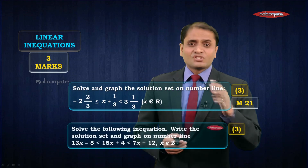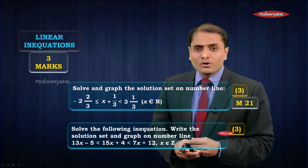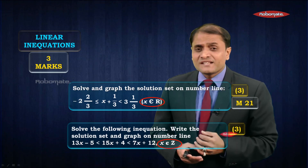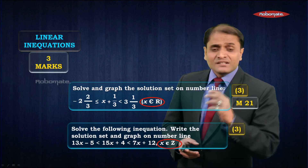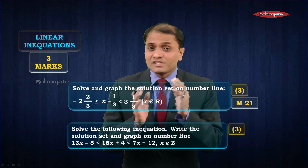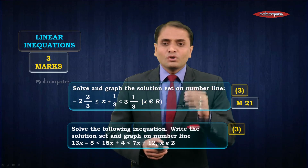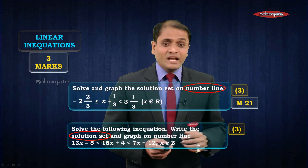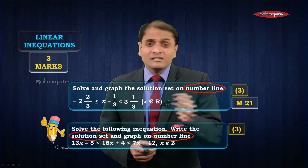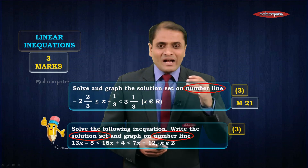Let's start with the first chapter, linear inequations. You can expect one question of three marks where they will give you an inequation and ask you to solve it. One important point: at the end of the question they will mention whether x belongs to real numbers or x belongs to Z, meaning integers. Accordingly you have to write down the solution set. They will normally ask you to show the solution set on the number line. Remember, to draw the number line you must always use pencil — you cannot draw it with pen or you will lose marks.